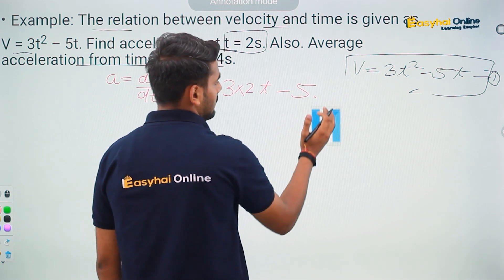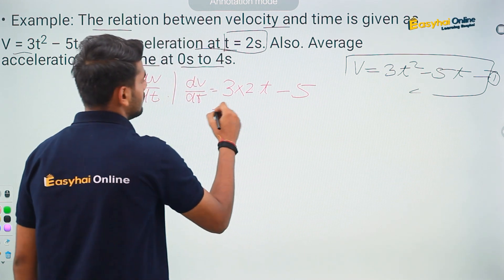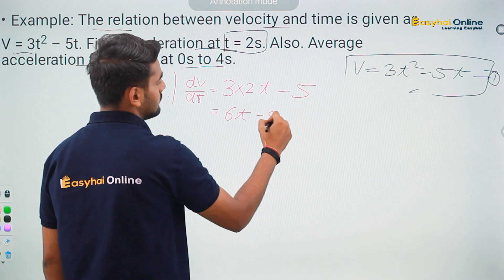3 into 2 into t minus 5. This is going to be equal to 6t minus 5.